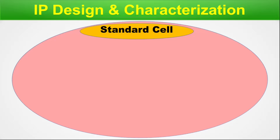There exist PVT variations — process, temperature, and voltage — as well as metal track variations in the standard cell library. Based on the process there could be FinFET or CMOS variations. Another type of variation comes from the bulk or SOI substrate on which the IP is designed. Containing all these variations makes this the largest and fattest IP category in the entire IP domain.